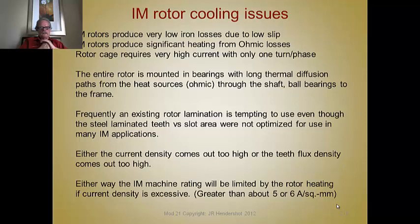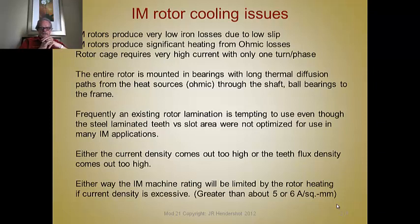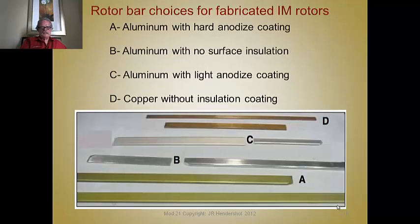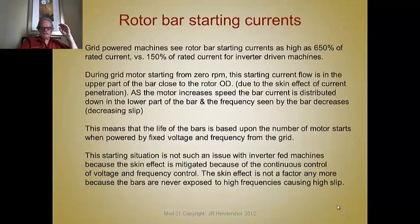It's tempting to use an existing lamination because it's cheap and available, even though the rotor tooth and slot area were not optimized for inverter applications. If this is the case, start with NEMA type A — that's your best bet. Don't try the other bar shapes. What happens with the wrong slot area is either the current density is too high or the tooth flux density is too high for peak torques — either way, the machine will be limited by rotor heating.